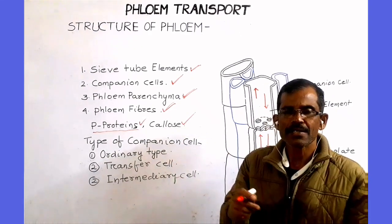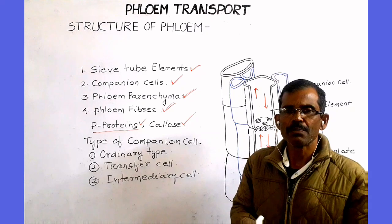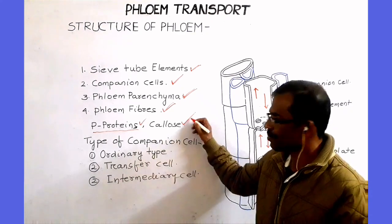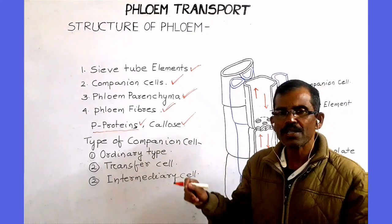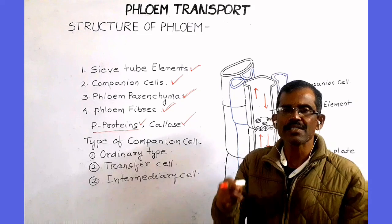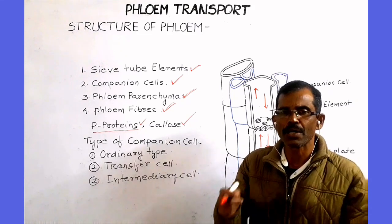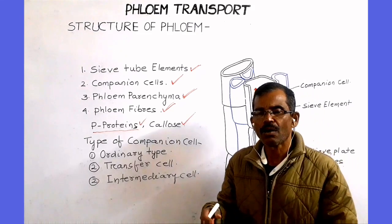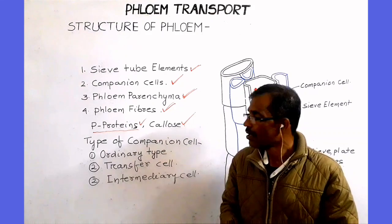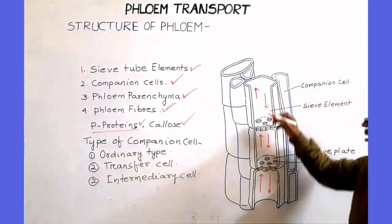In addition, the sieve tube element also contains callose, which seals off the damaged sieve tube element in order to reduce the loss of phloem sap.